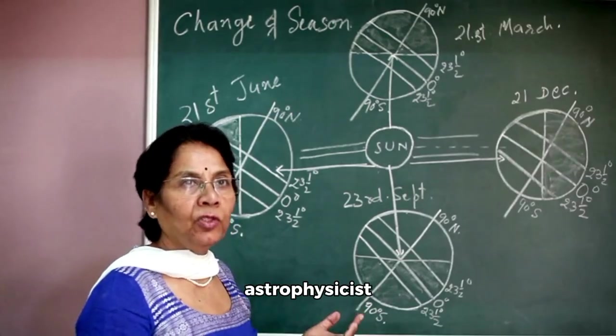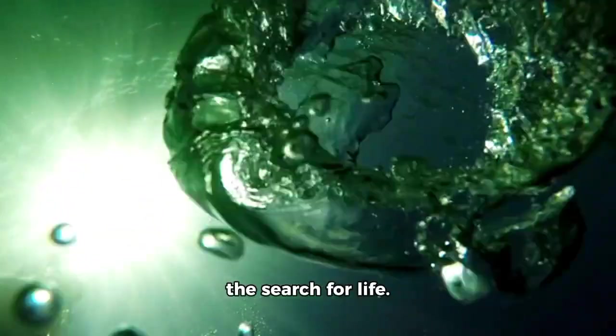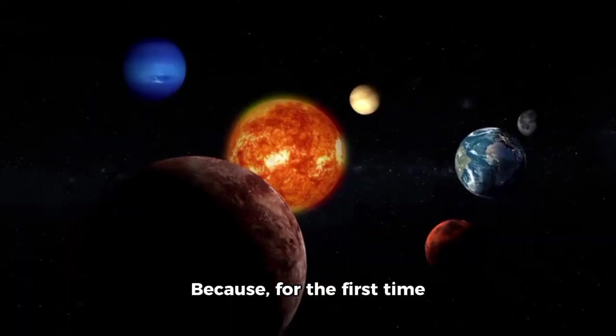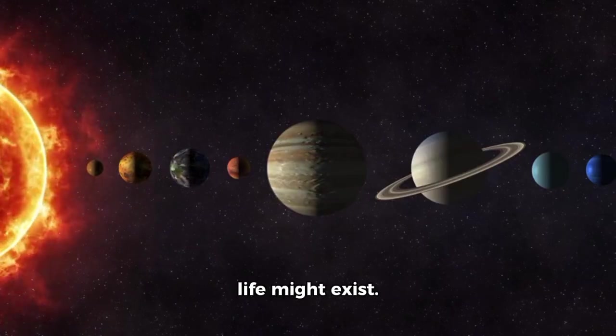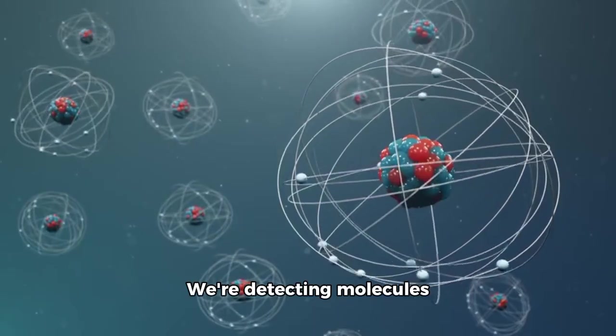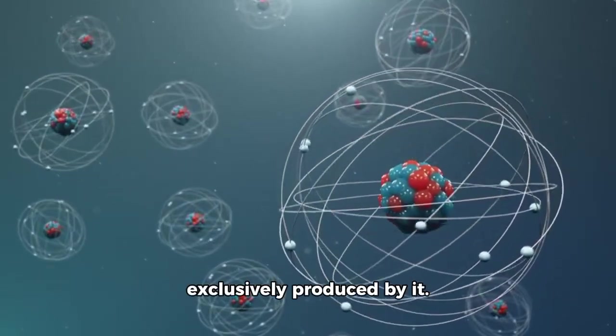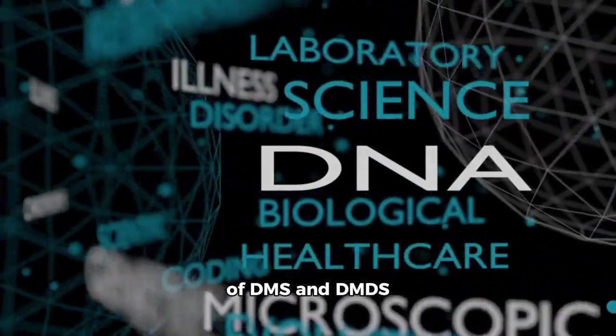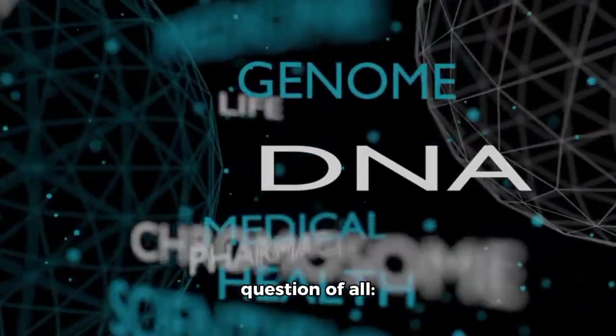Cambridge astrophysicist Nikumad Husuddin called it a watershed moment in the search for life. Because, for the first time in human history, we're not just seeing planets where life might exist. We're detecting molecules that on Earth are exclusively produced by it. K-18b's discovery of DMS and DMDS raises the biggest question of all.